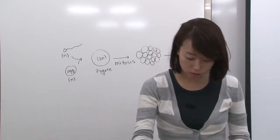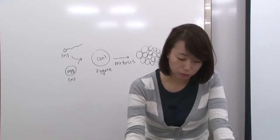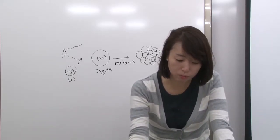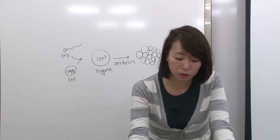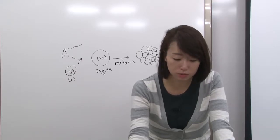So number two is also A. Number three, human males begin to produce sperm at puberty. So beginning to produce sperm, that's meiosis, right? So it's going to be B.